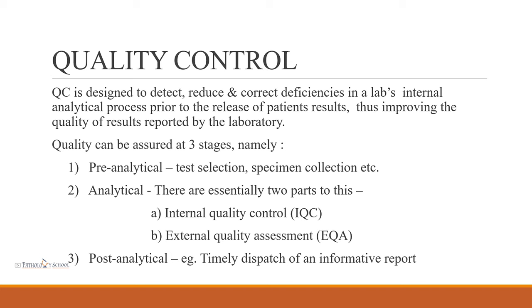Quality can be assured at three stages: the pre-analytical stage, the analytical stage, and the post-analytical stage. In the pre-analytical stage, it starts from test selection and specimen collection onwards. The analytical stage is the core processing of the sample and includes two parts: internal quality control and external quality assurance, which will be dealt with in detail. The post-analytical stage involves timely dispatch of the informative report.